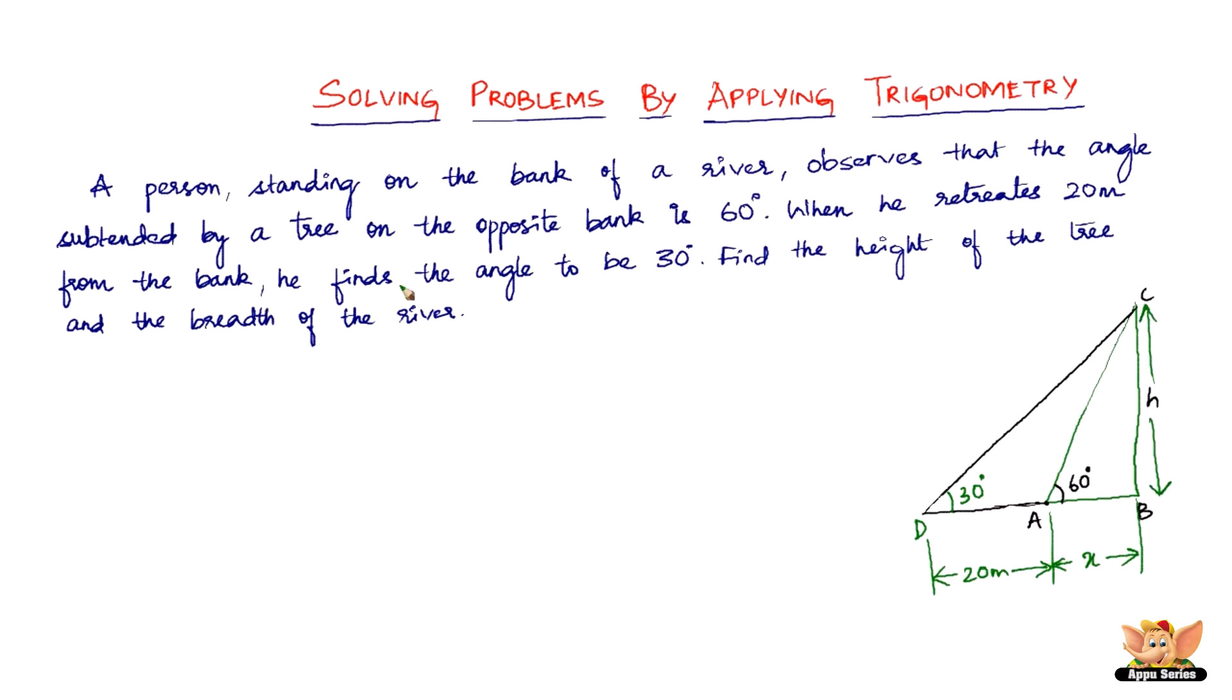So what are we supposed to do now? This is the data that we've got and we've converted that into a diagram. So the final question is, find the height of the tree (that is find h) and the breadth of the river (x). Let's see how we go about solving this problem.